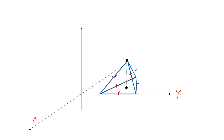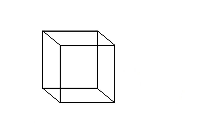I'll show you how to construct the tetrahedron using a cube. A cube has eight vertices and a regular tetrahedron has four, so you have to select only half of the cube's vertices.